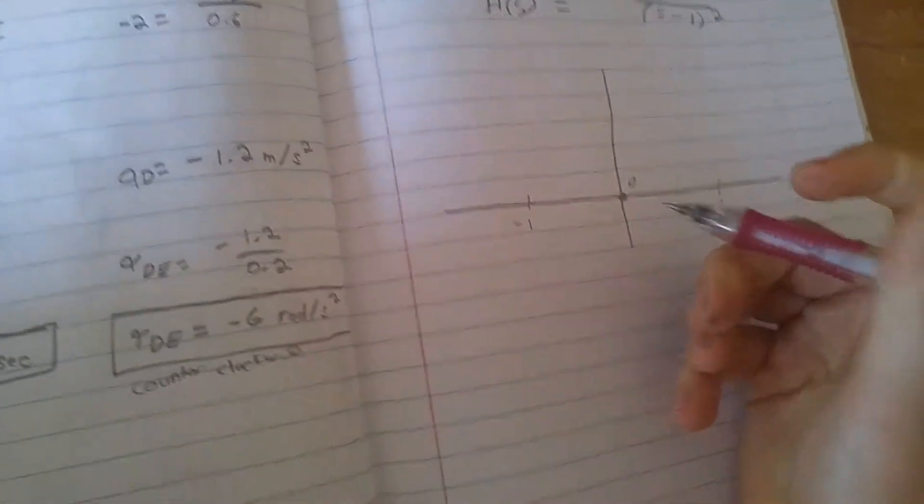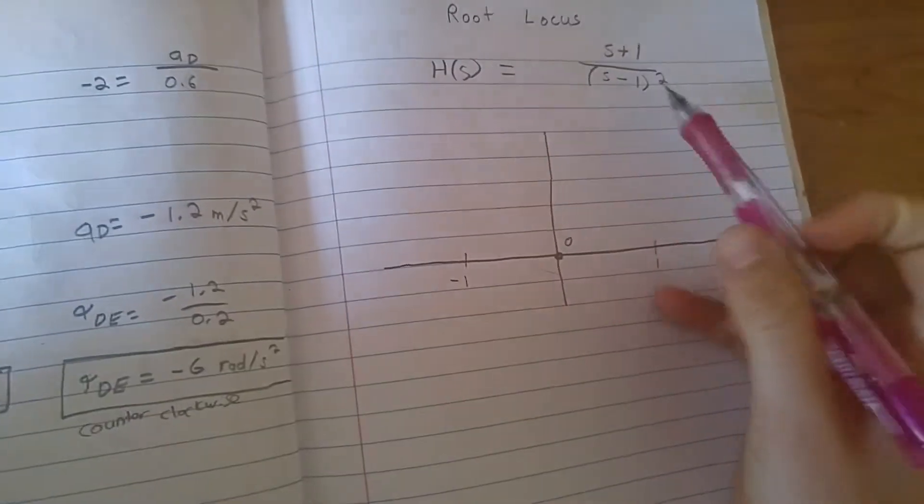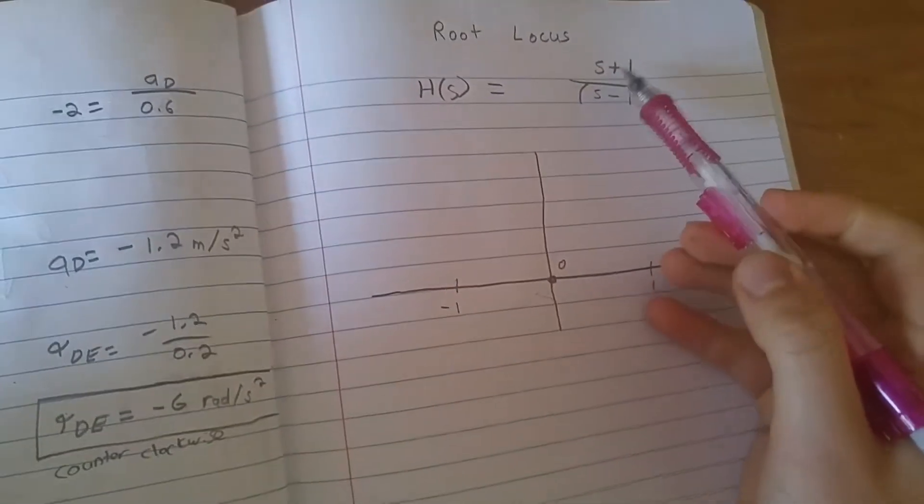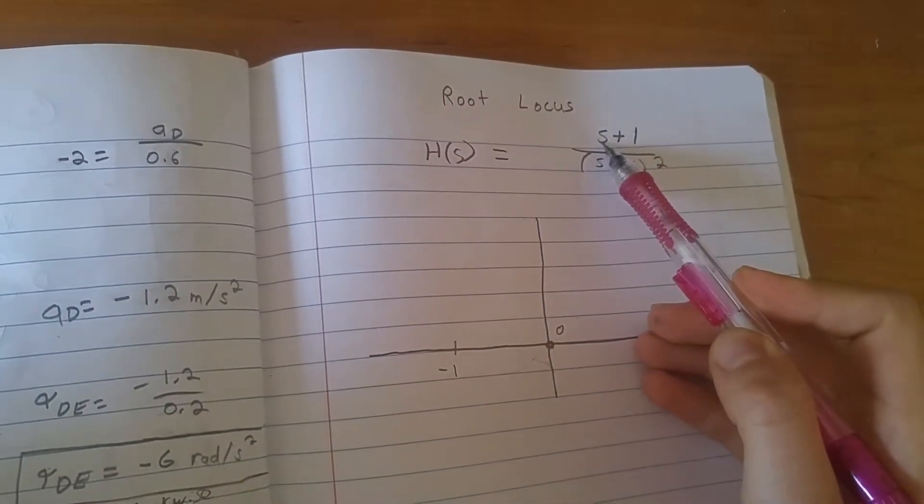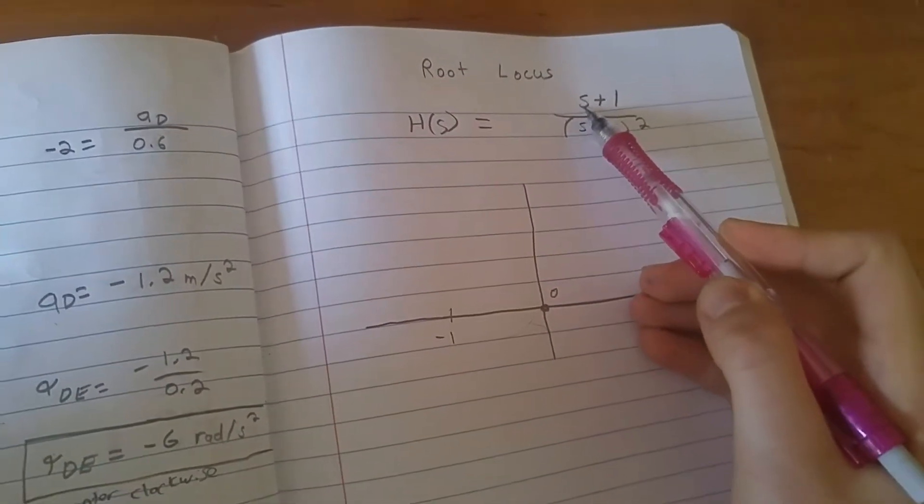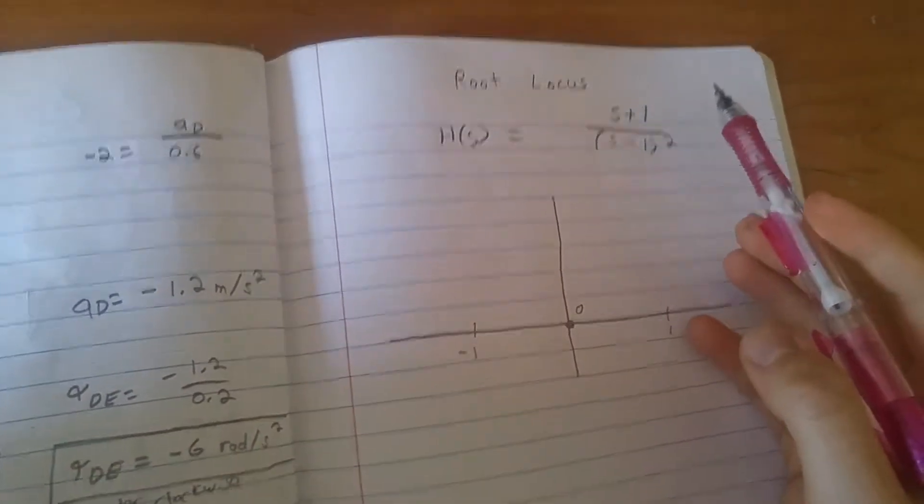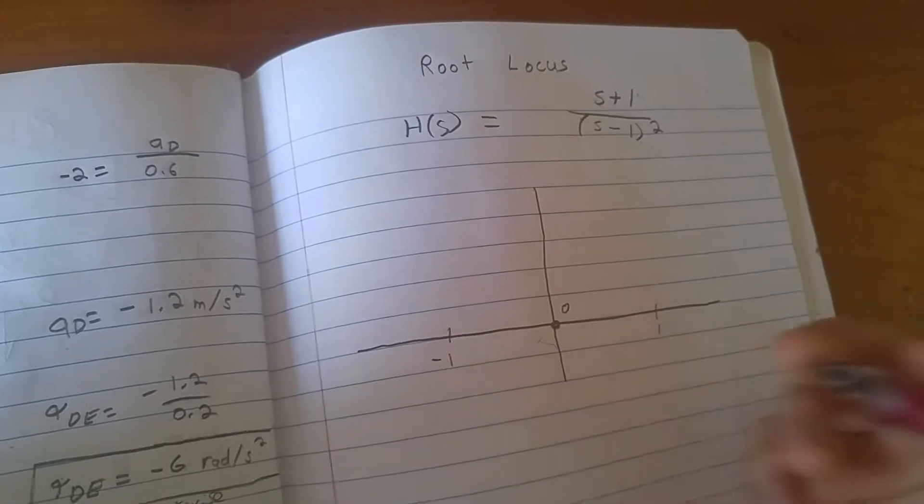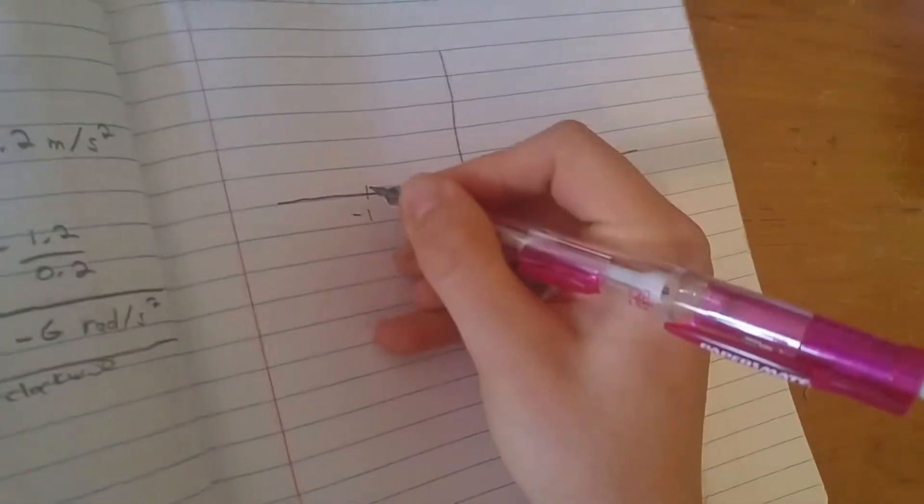I can go ahead and just plot the zeros and the poles right now. The zero of this function is going to be negative one, because if I plug in s equals negative one, negative one plus one equals zero. If you divide from zero, then it's going to be zero. So you can draw the zero at negative one right here.